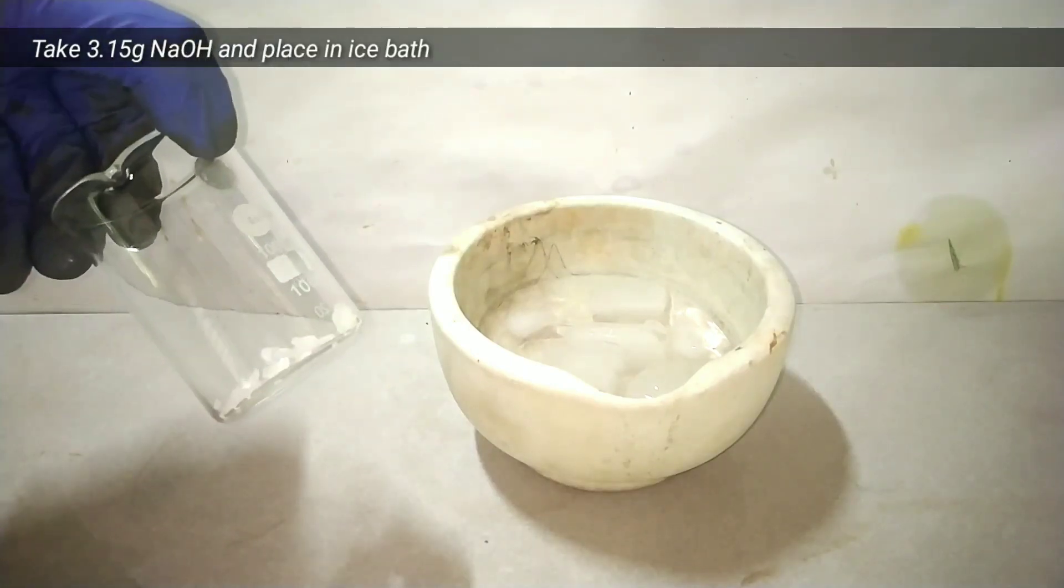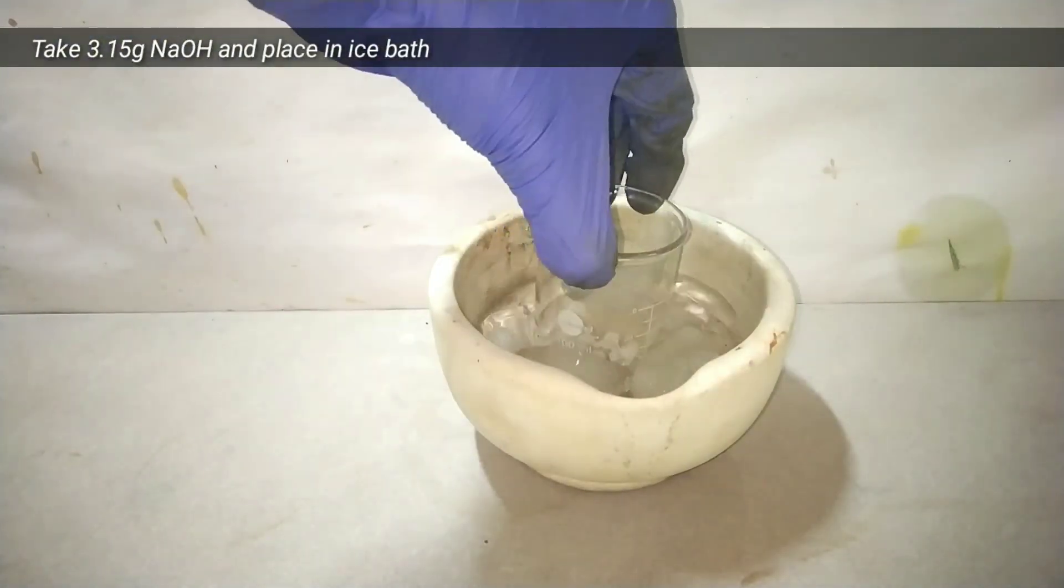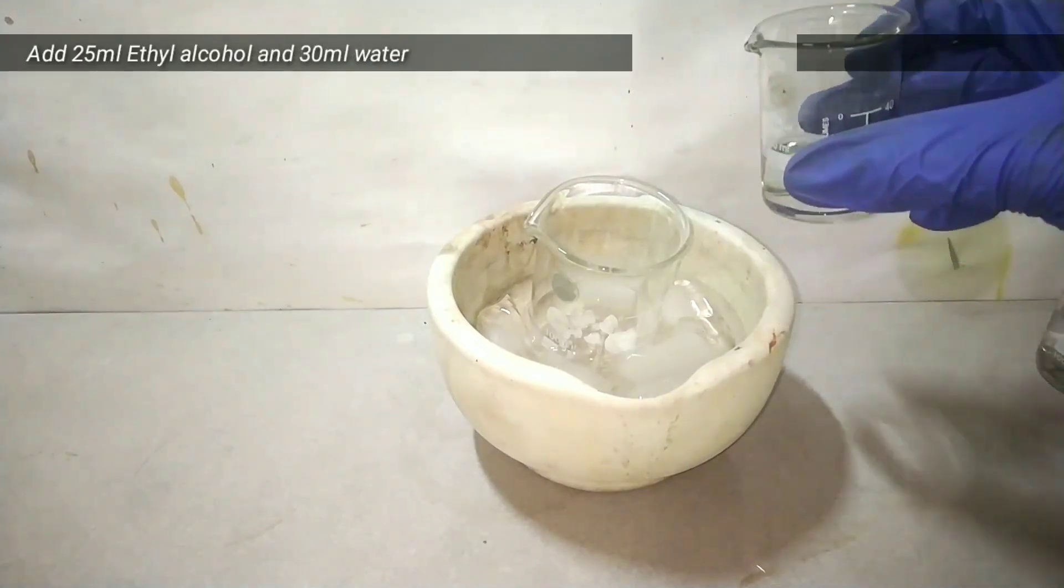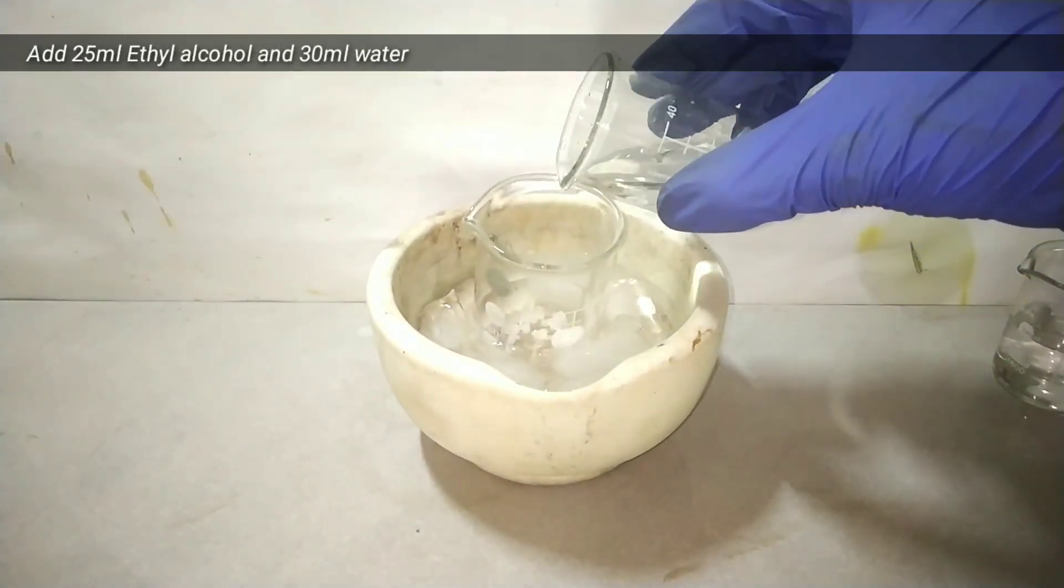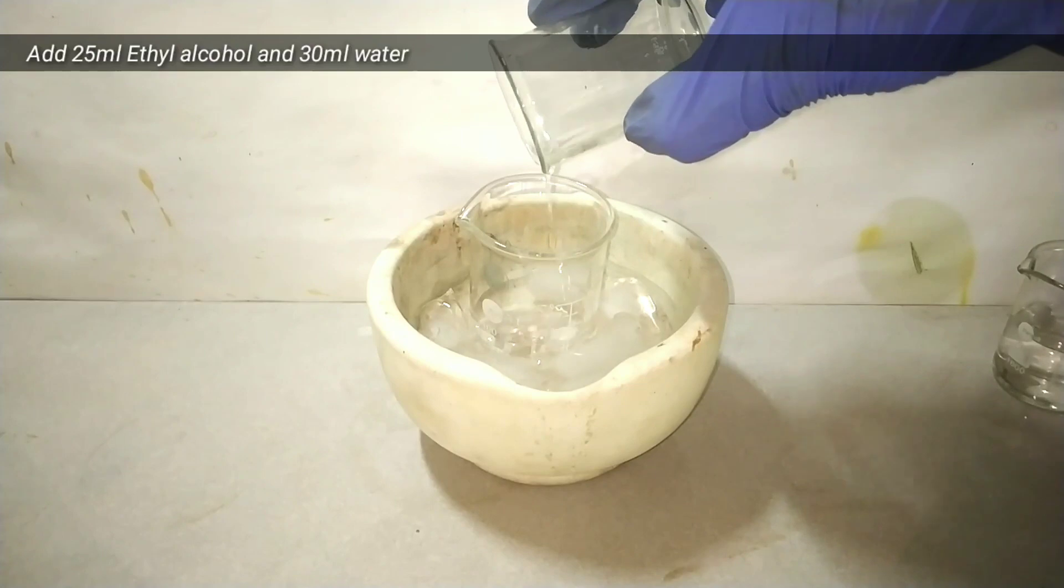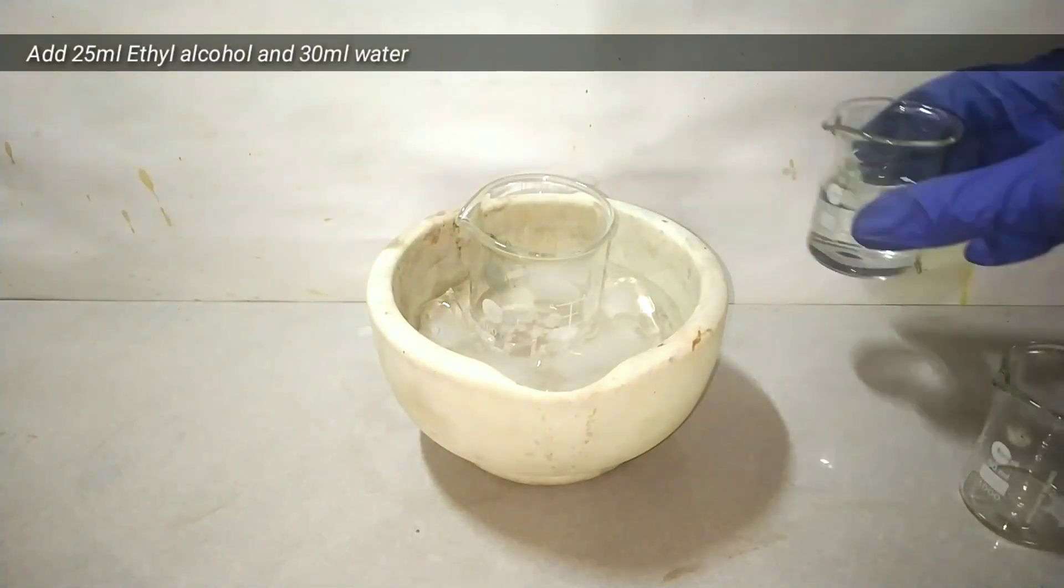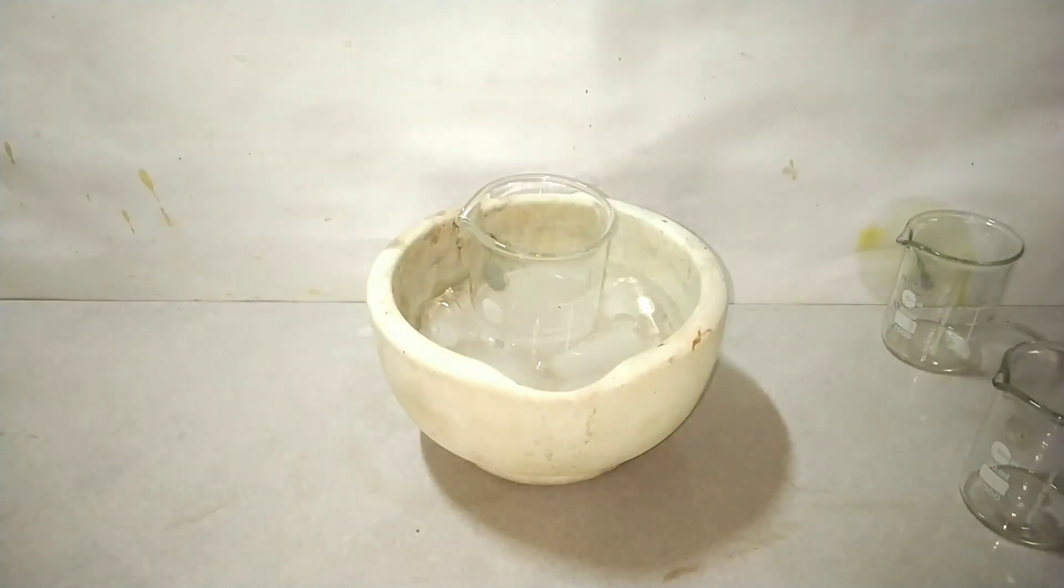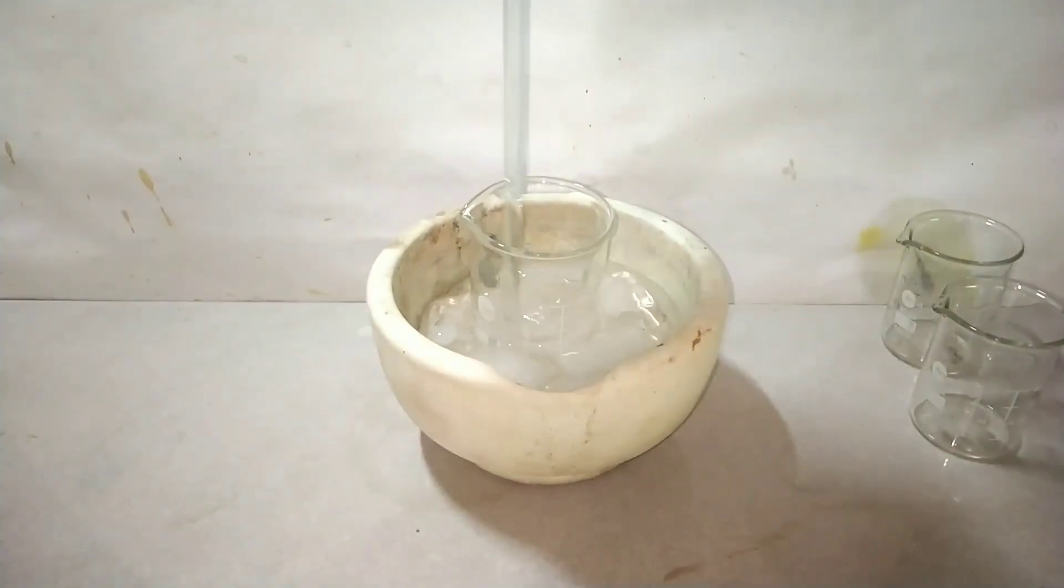We start by taking 3.15 grams of sodium hydroxide in a 100 milliliter beaker and keeping it in an ice bath. Now we add 25 milliliters of ethyl alcohol into it and then 30 milliliters of distilled water. Then we mix them up well so that sodium hydroxide dissolves in it.